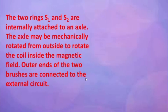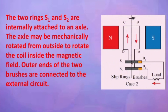The two rings S1 and S2 are internally attached to an axle. The axle may be mechanically rotated from outside to rotate the coil inside the magnet. The magnets are stationary, but the coil is moved in or out, which means an induced EMF is produced in the coil. This produces the induced current. The outer ends of brushes B1 and B2 are connected to the external circuit.